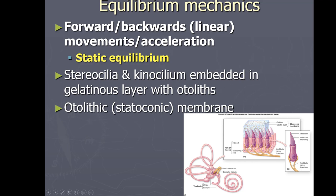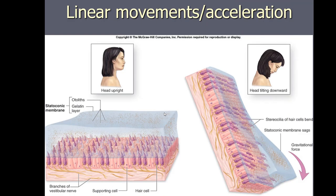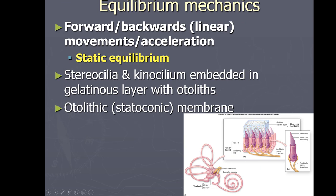The hair cells are connected to neurons. The vestibule and macula are responsible for detecting forward and backward accelerations — generally called static equilibrium. For example, sitting in a car and taking off represents a forward acceleration. If you tilt your head down, the gelatinous otolithic membrane slides, and that's what gets detected. The gelatinous layer is called the otolithic membrane or statoconic membrane.